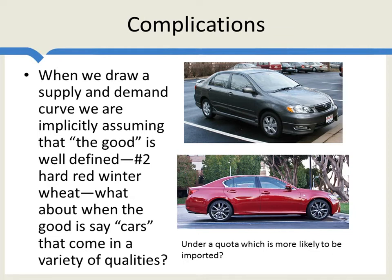Let's look at a few complications. When we draw supply and demand curves, we implicitly assume the good is very well defined, like number two hard red winter wheat. Things get more complicated when the good comes in different qualities. With cars, for example, there's a wide variety of qualities. In this case, not only can tariffs and quotas be subtly different, but the two main types of tariffs — a percentage or ad valorem tariff like 10%, versus a unit tariff like a $10 tariff — can also have different effects.